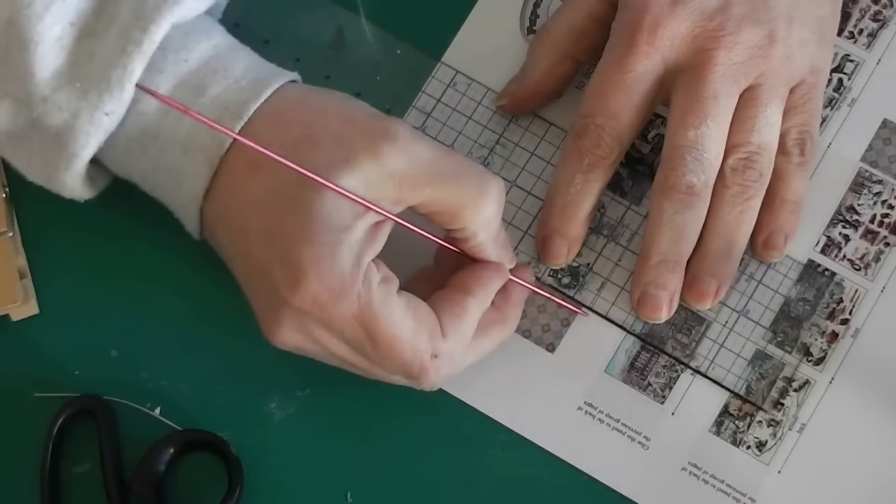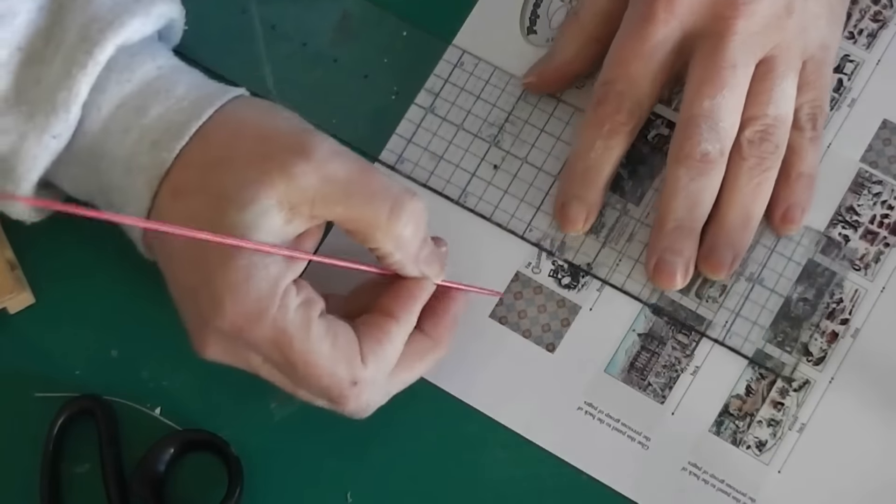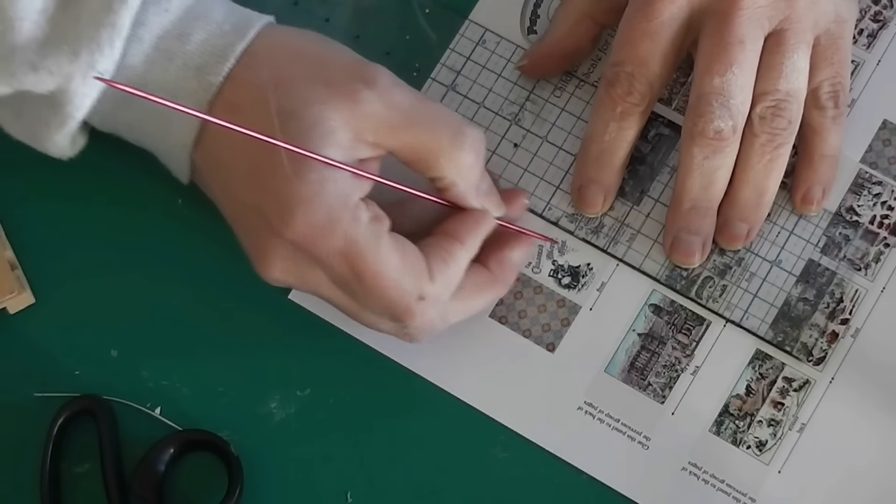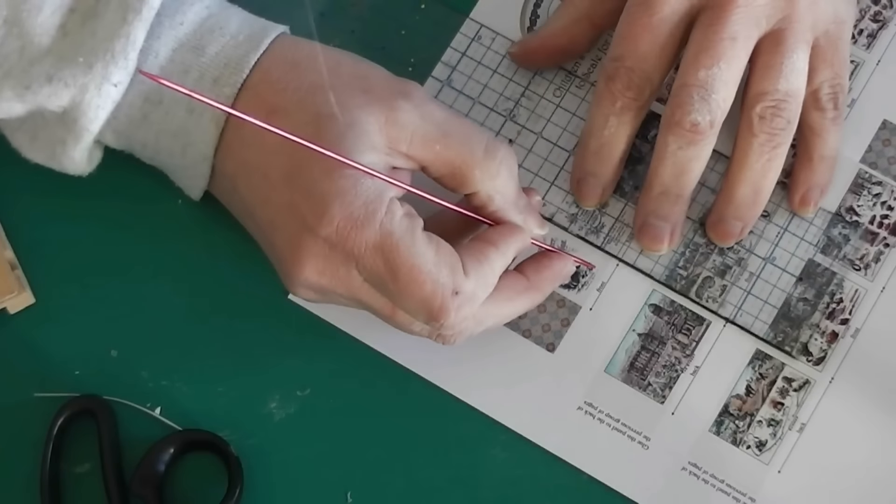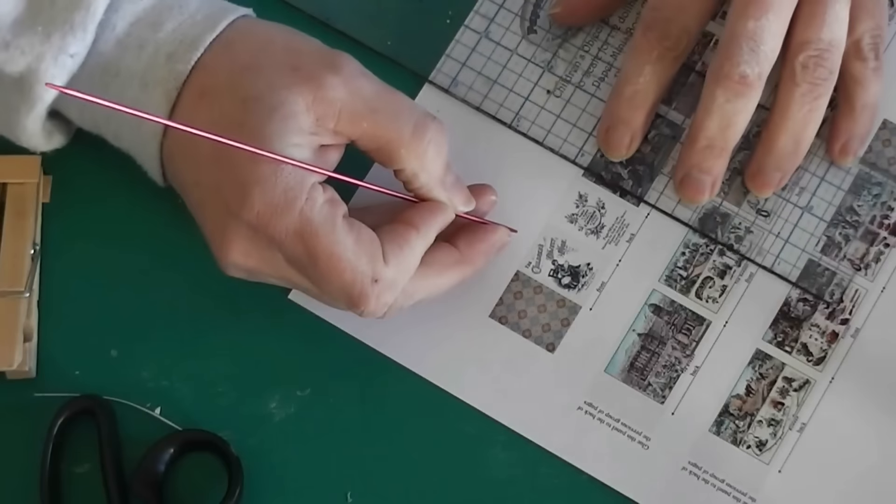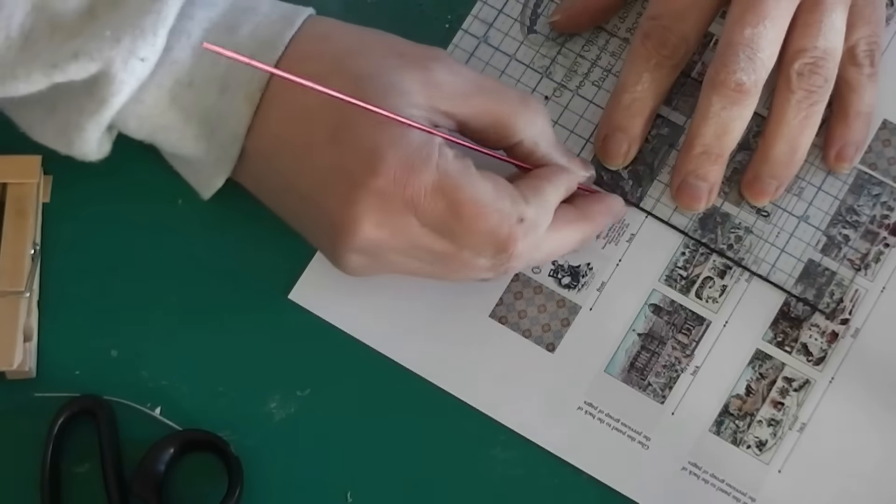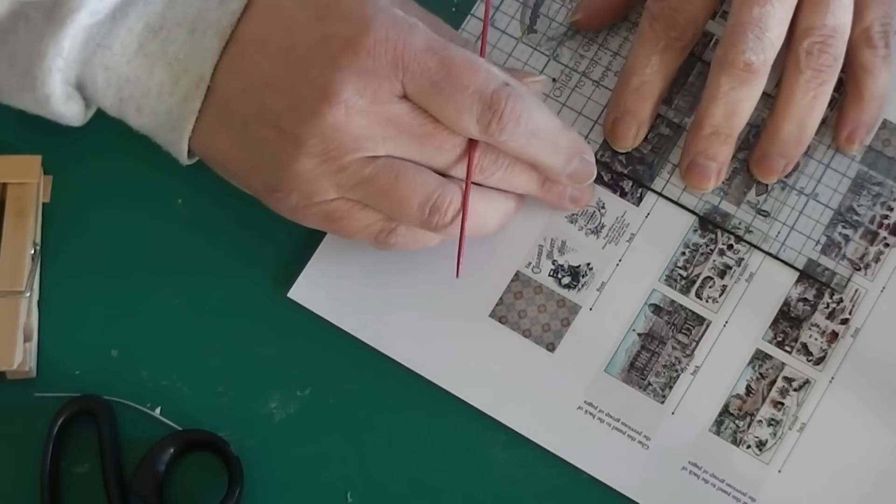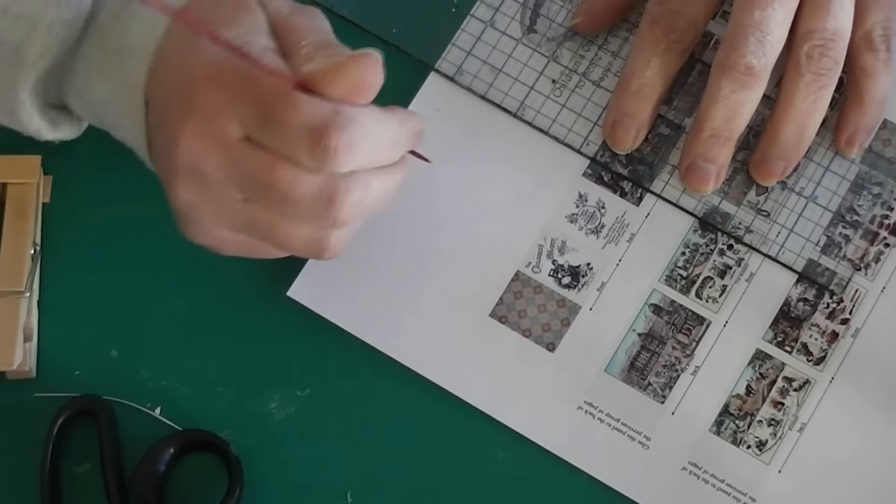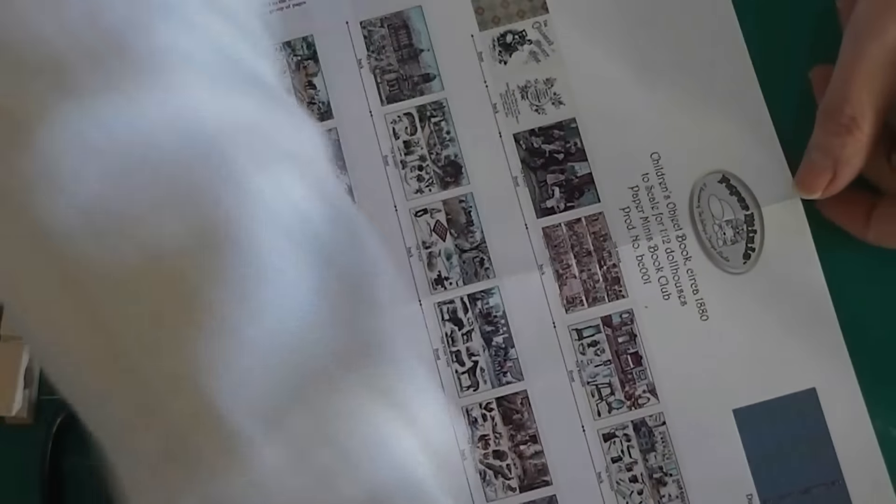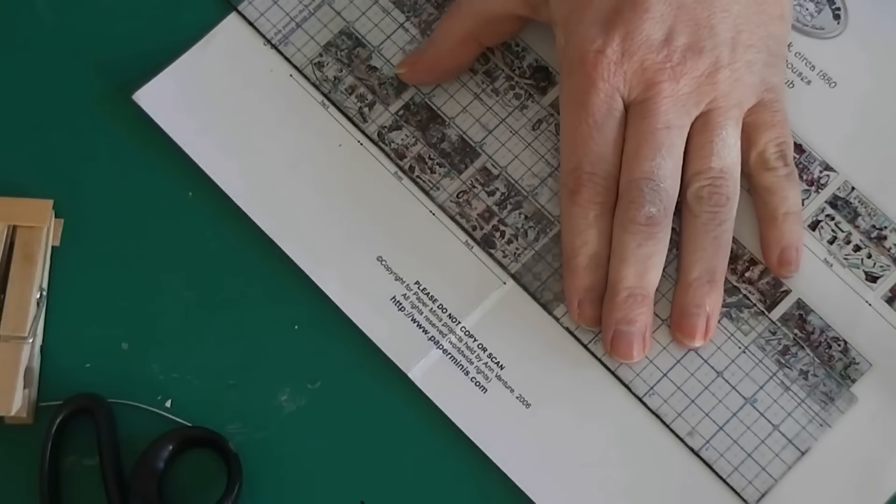There's lines. Today I'm using a double pointed knitting needle. I couldn't find my dental pick. So I'm going to very carefully line my clear ruler up, and I'm going to make a score line. Now there's little arrows where the two pieces come together, and you can see the mark in the paper where it's printed. I'm going to go through and score every one of these little lines.